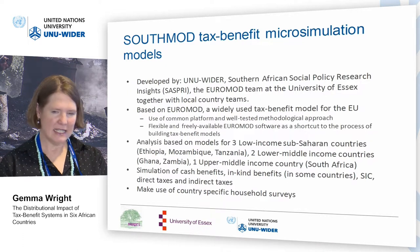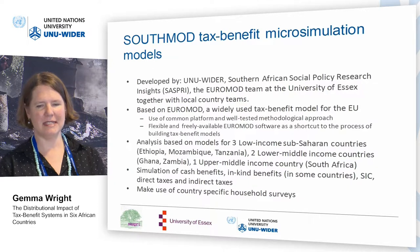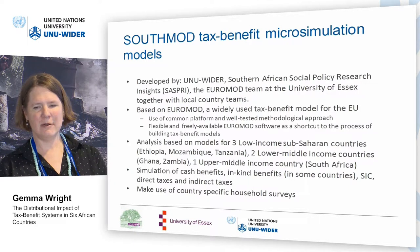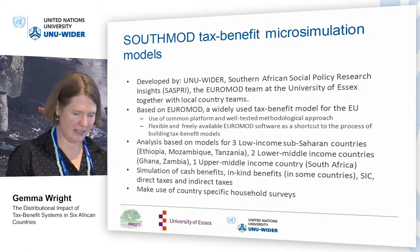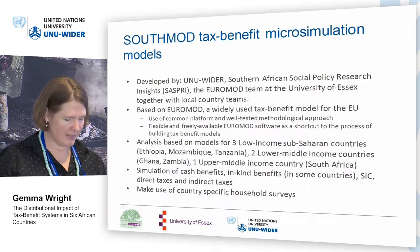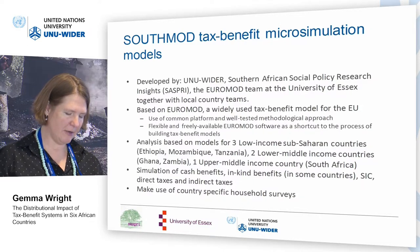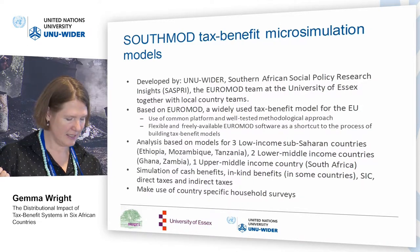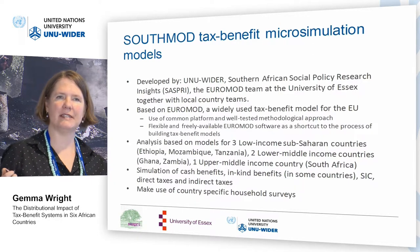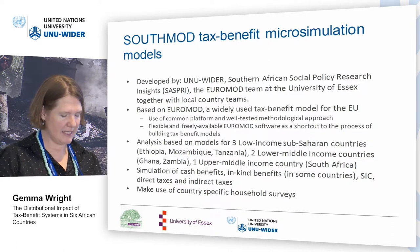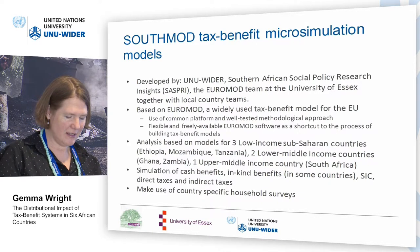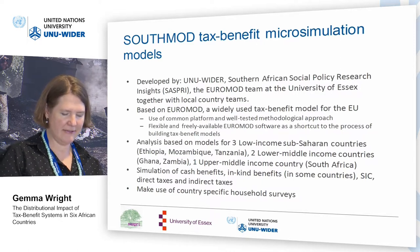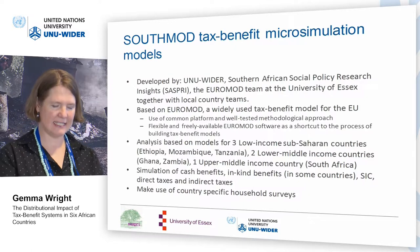Our analysis is based on three low-income countries — Ethiopia, Mozambique, and Tanzania — two lower-middle-income countries — Ghana and Zambia — and one upper-middle-income country, South Africa. For Ethiopia, we use the Ethiopia Socioeconomic Survey 2013–14. The Mozambique MOSMOD model uses the Household Budget Survey 2014–15 for two quarters. The Tanzania model, TASMOD, uses the Household Budget Survey 2011–12. The Ghana model, GARMOD, uses the Ghana Living Standards Survey GLSS-6 for 2012–13.